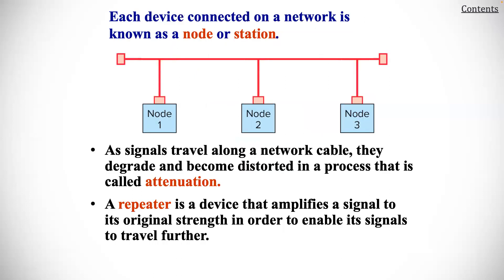Each device connected on a network is known as a node or station. As signals travel along a network cable, they degrade and become distorted in a process called attenuation. A repeater is a device that amplifies a signal to its original strength in order to enable a signal to travel further.